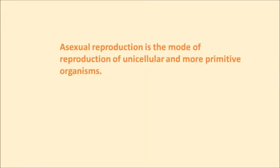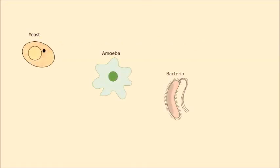Asexual reproduction. Asexual reproduction is the mode of reproduction of unicellular and more primitive organisms, such as yeast, amoeba, bacteria, and plants.